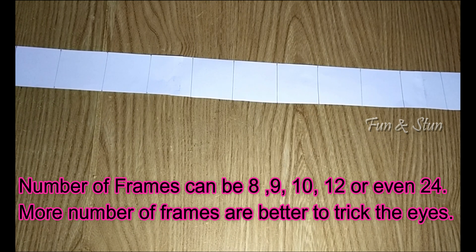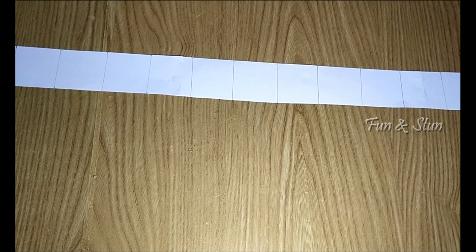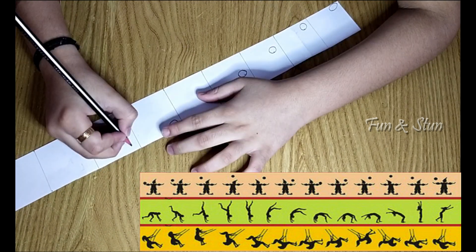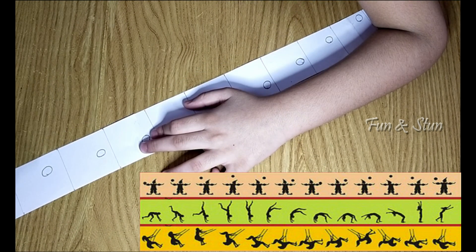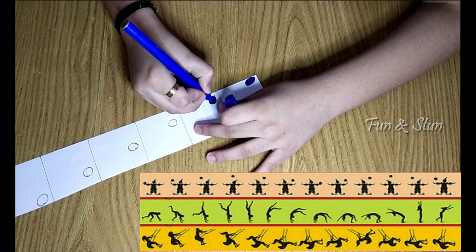It's up to you to choose the number of frames. It can be 8, 9, 10, 12 or even 24. Let's start drawing the pictures. The last picture should be followed by the first picture so that when we spin it, the animation keeps on repeating.